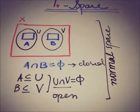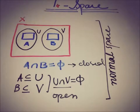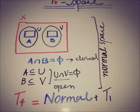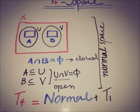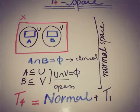Now we can talk about T4 space. The formula is that T4 space equals normal space plus T1 space. So a normal T1 space is a T4 space, and it is also known as a normal Hausdorff space.